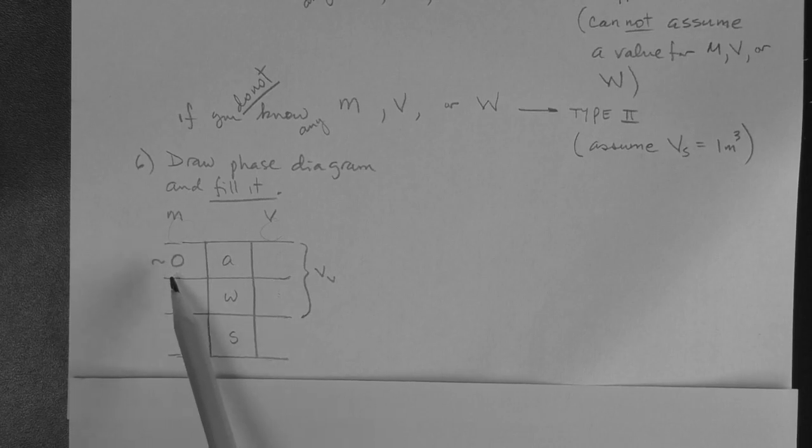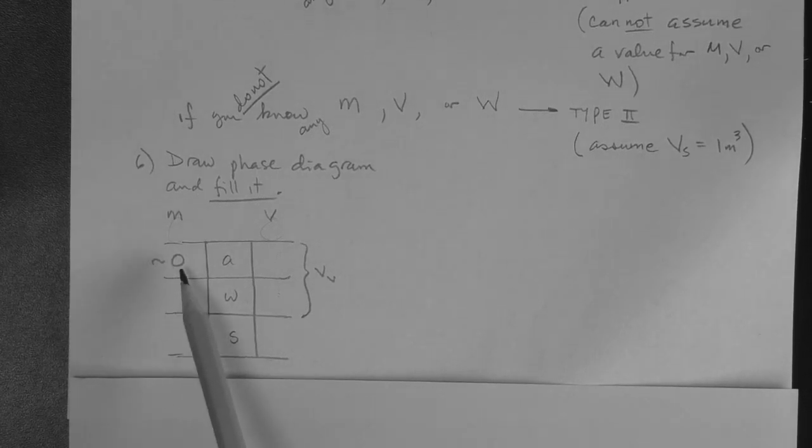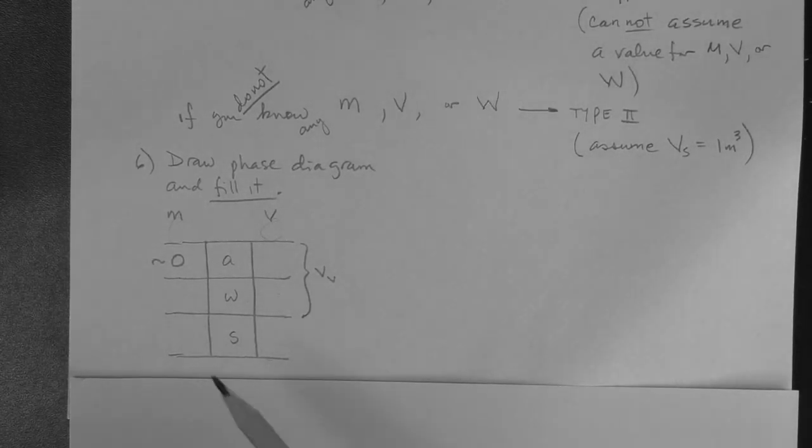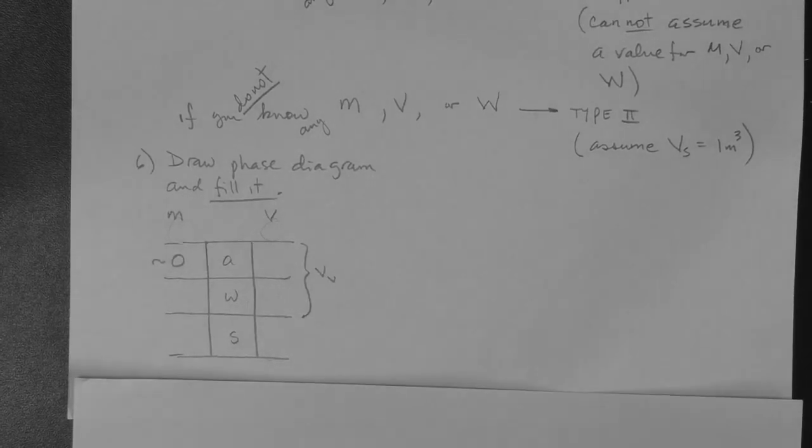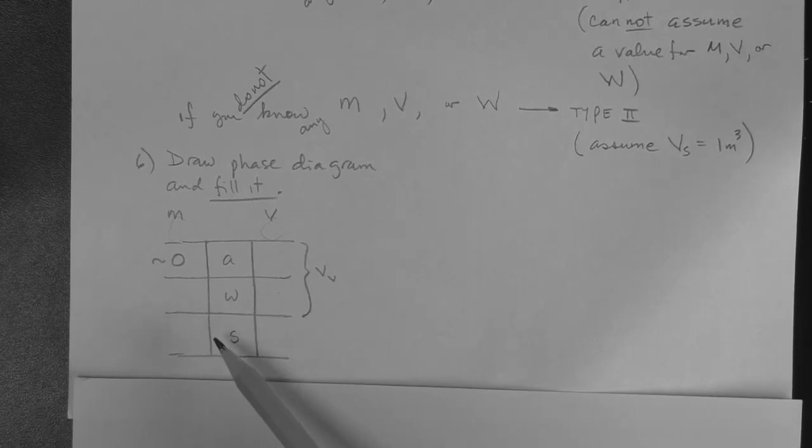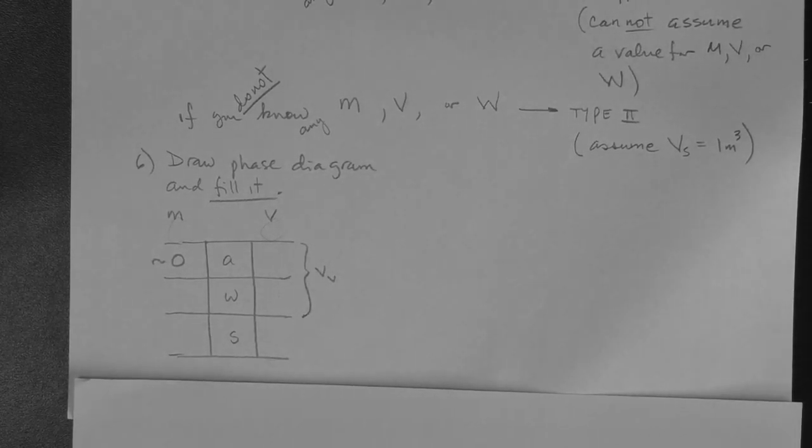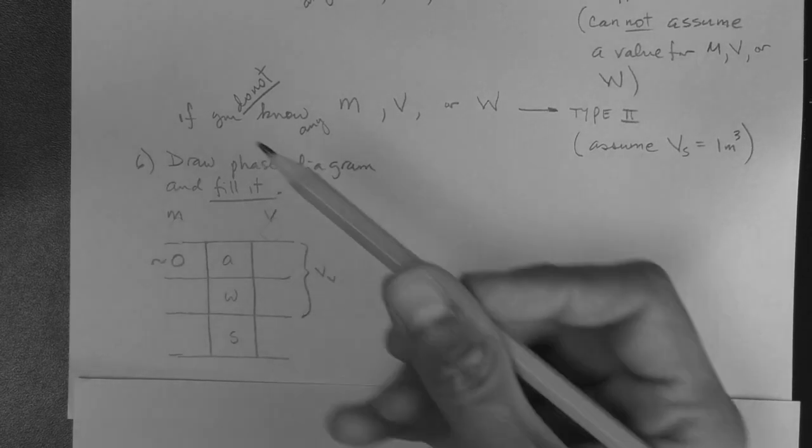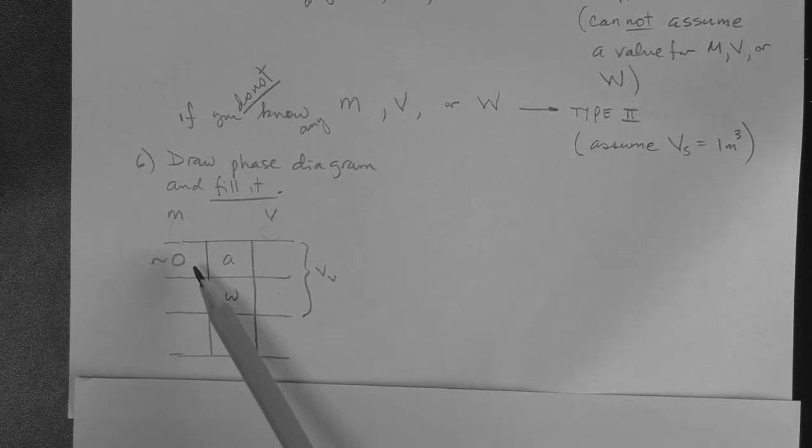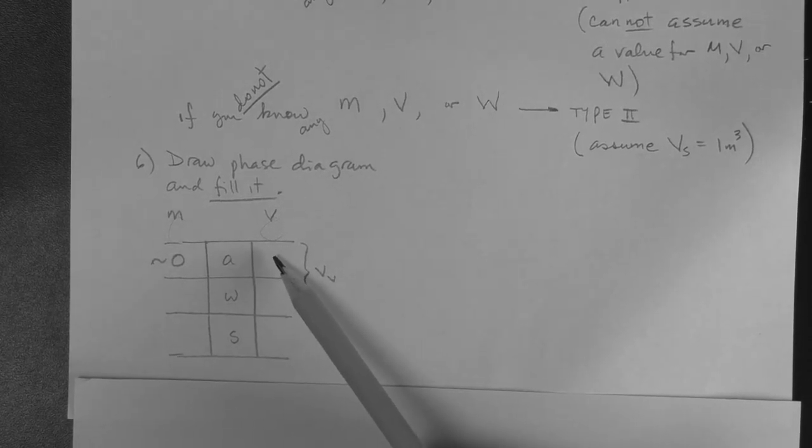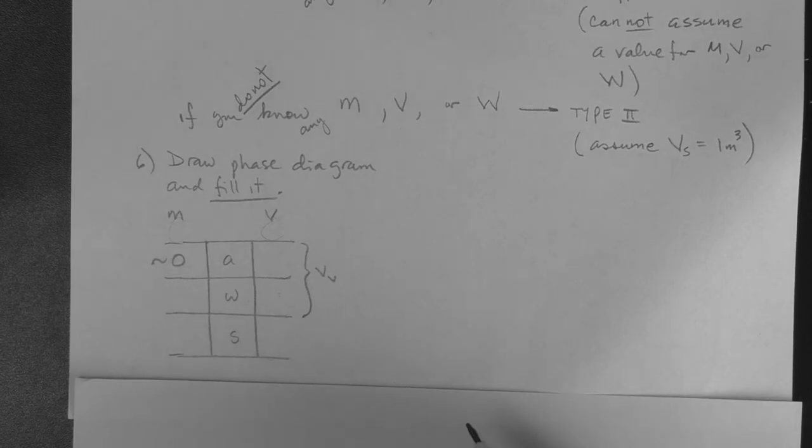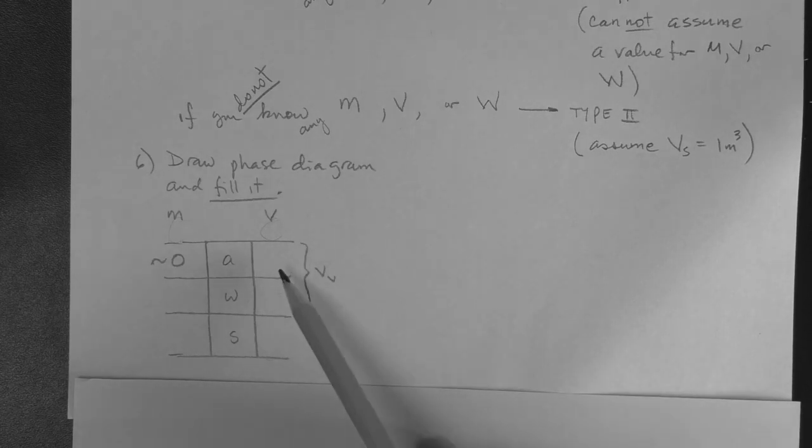The mass of air can always be assumed to be zero. If the soil is saturated, then there's no air. And in that case, this is a true zero. But if the soil is, let's say, moist or dry, you know that there's air in the voids in those two cases. Well, what happens? You can assume that the mass of that air is zero because the density of air is very low. That's why we have this squiggle here. So you can always, always have a zero here. Now, what about the volume of air? The volume of air can only be zero if the soil is saturated because there's no air. But if the soil is moist or dry, then there is air, and therefore you cannot write a zero here.